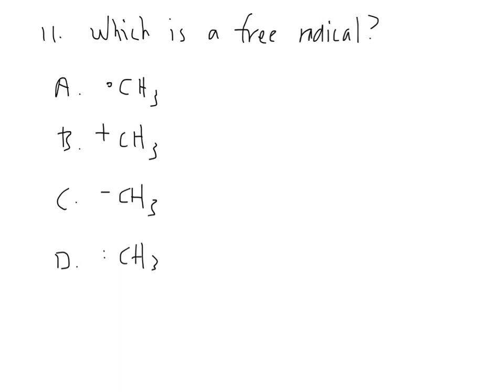Eleven, which is a free radical? The idea is that you recognize it's an atom with one unpaired electron. So it's not an ion. So that takes B and C out of it, and it's an unpaired electron, so it's represented with letter A.